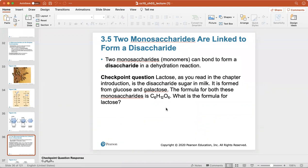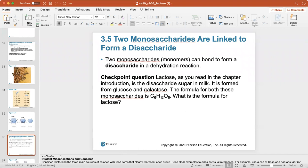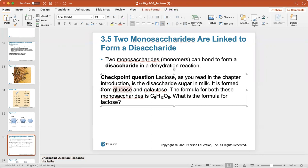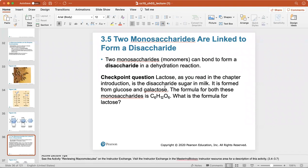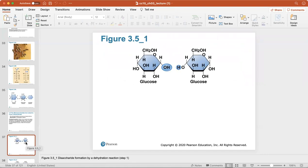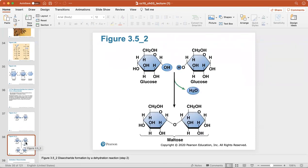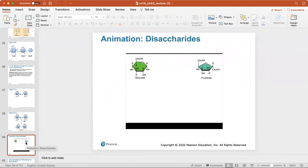Two monosaccharides can bond to form a disaccharide in a dehydration reaction. For example, lactose is the disaccharide sugar in milk. It's formed from glucose and galactose, and the formula for both of these monosaccharides is C6H12O6. So what would be the formula for lactose? We would just double everything, C12H22O11, because we're taking glucose and galactose and adding them together. Here's glucose and glucose joined together, disaccharides formed by the dehydration reaction to form maltose.